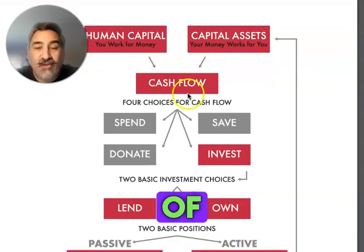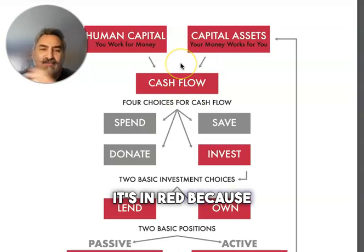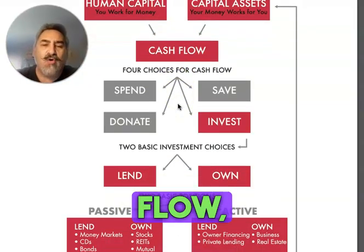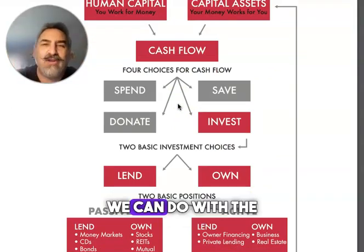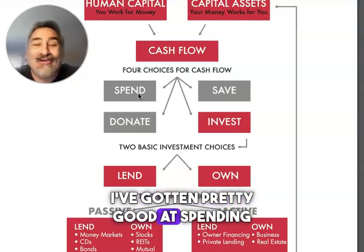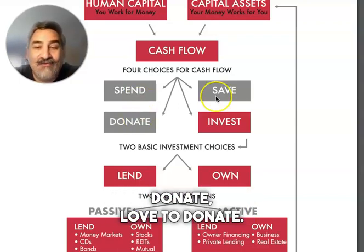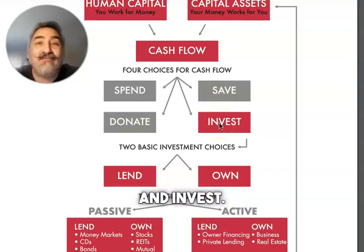Both of these generate cash flow — there's money coming in. It's in red because money's moving. When we have cash flow, there's only four things we can do with the money: we can spend it — I've gotten pretty good at spending money — donate, love to donate, or save — not great at that — and invest. I am enjoying the investing side of things.